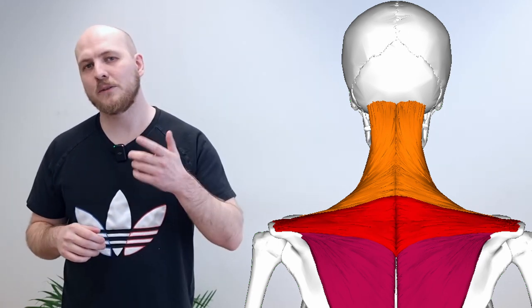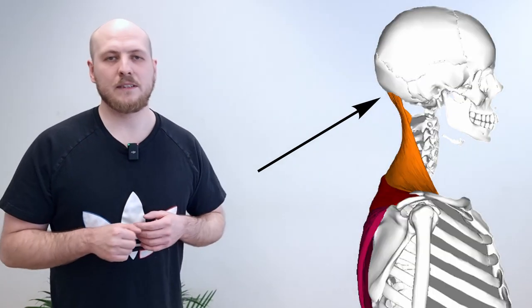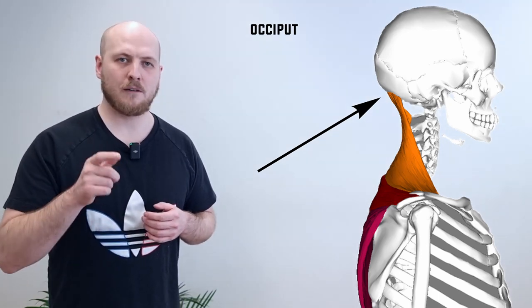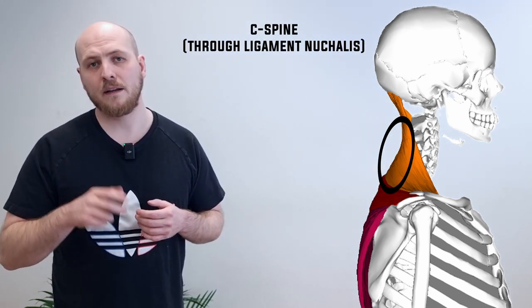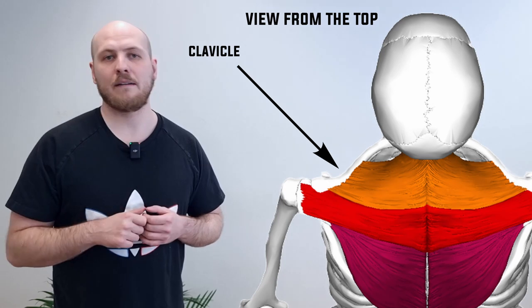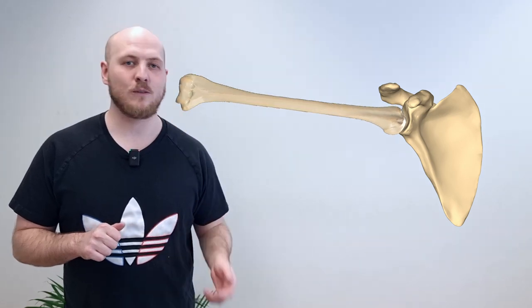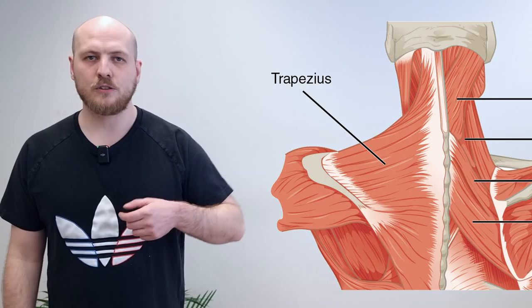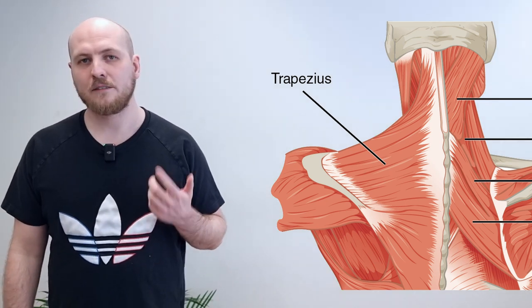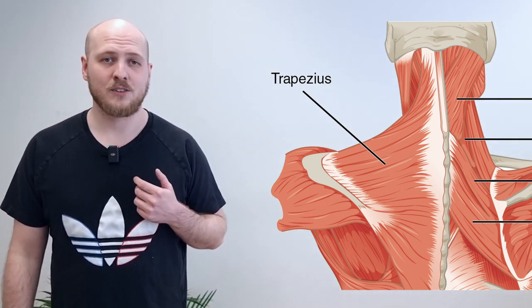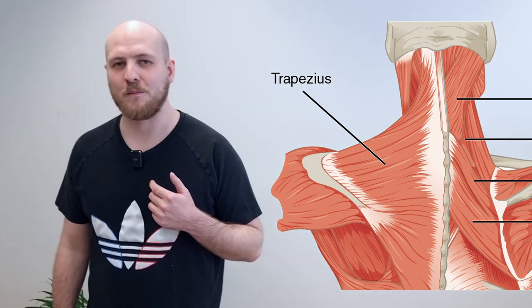Let's talk briefly about the upper traps — where is it and what does it do? The upper trapezius starts from the occipital region and cervical spine and attaches to the clavicle, the collarbone. The upper part rotates your shoulder blade by moving the clavicular bone, and this movement is really important if you want to lift your hands up without pain or restrictions. It also side bends your neck and your head, and rotates it — it's an important muscle.